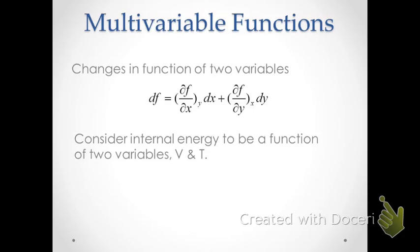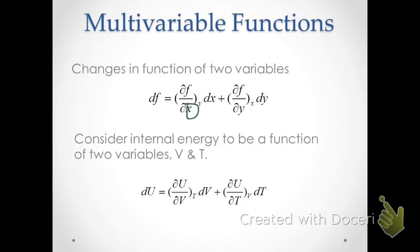Now we look at how this applies to the thermodynamic function for internal energy. We have thus far three variables in our system: pressure, volume, and temperature. But because two of those variables are independent and one is dependent, we only need to write our function in terms of two variables. In this case, we choose volume and temperature, as writing internal energy as a function of volume and temperature will be more convenient for most applications. We've replaced f with the internal energy function U, x with volume, and y with temperature.